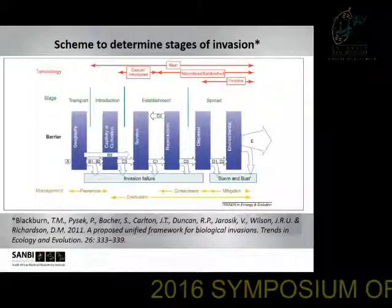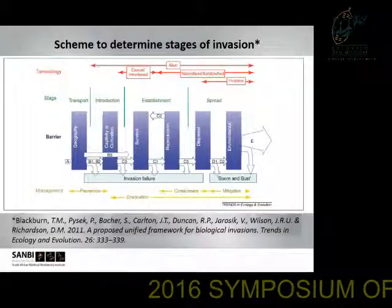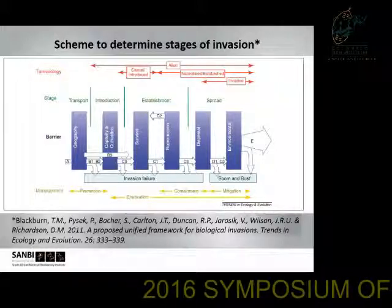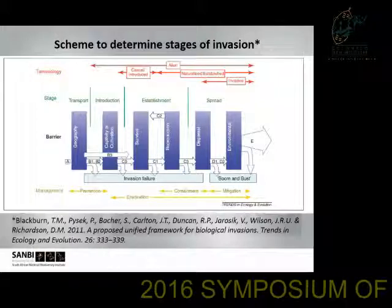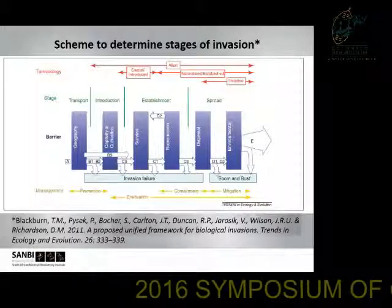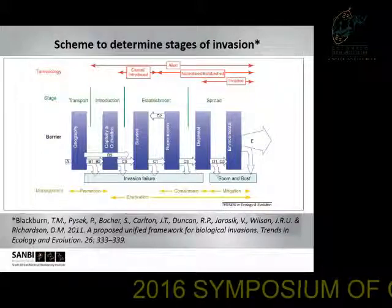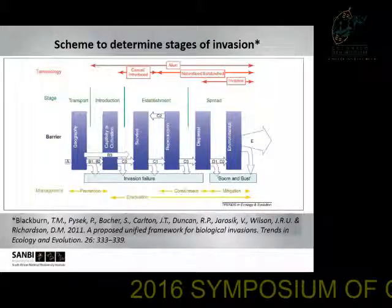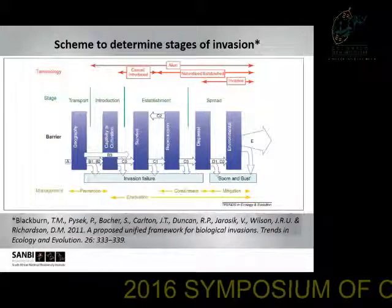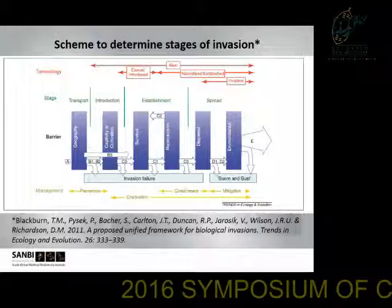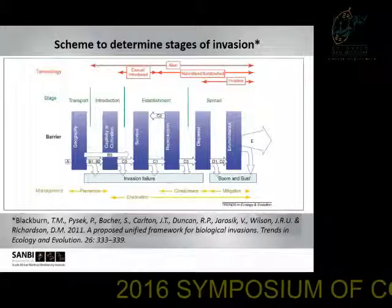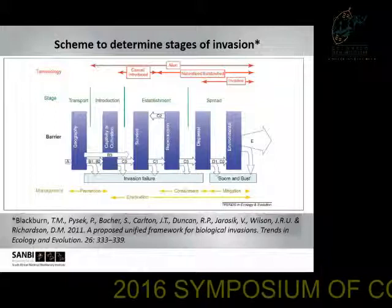The second scheme is that of Blackburn et al., published in 2011. It is based on four stages: transport, introduction into cultivation, establishment, and eventually spread. The six blue pillars represent barriers, indicating that very few species actually reach the spread stage.